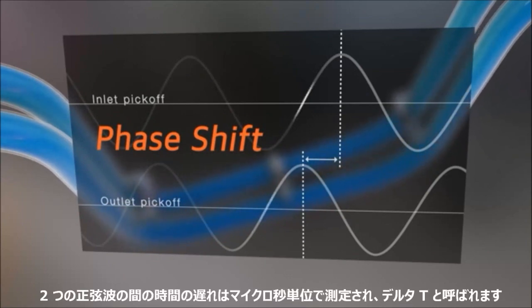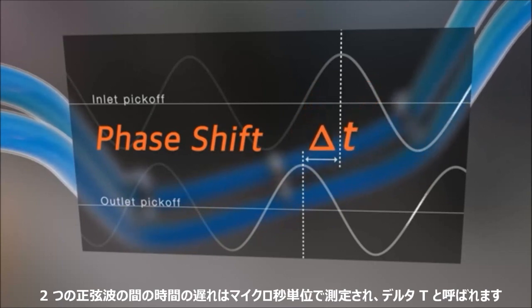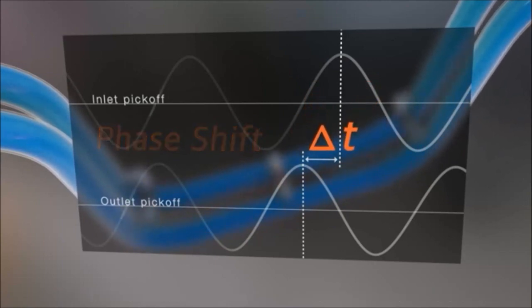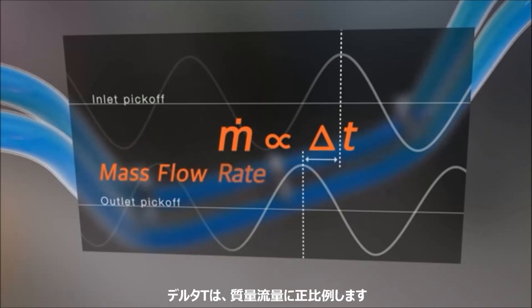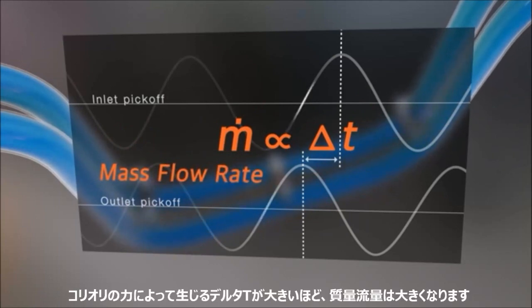The time delay between the two sine waves is measured in microseconds and is called delta T. Delta T is directly proportional to the mass flow rate — the greater the delta T created by the Coriolis force, the greater the mass flow rate.